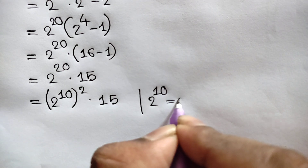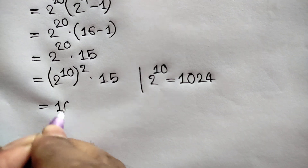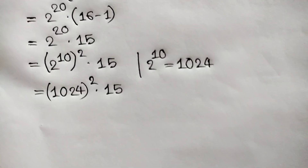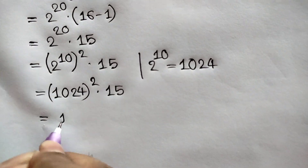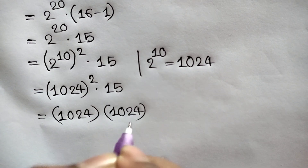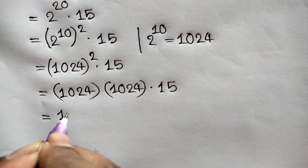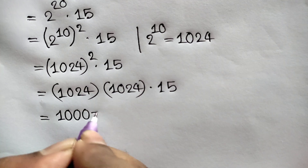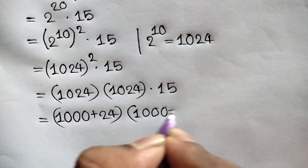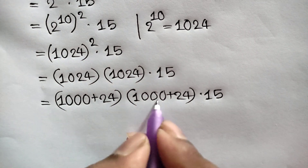So we can write here 1024 whole squared times 15, which is equal to 1024 times 1024 times 15. Now 1024 can be written as 1000 plus 24, so similarly we can write 1000 plus 24, times 1000 plus 24, times 15.